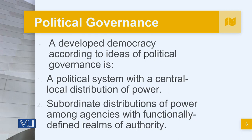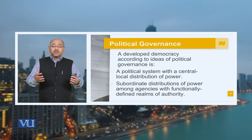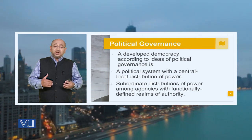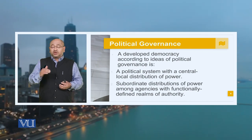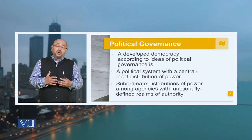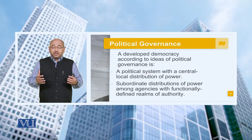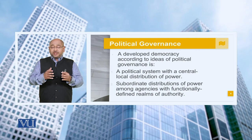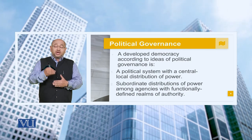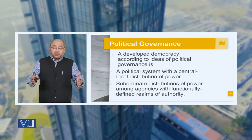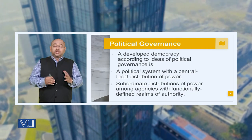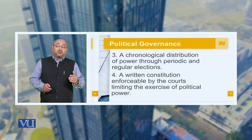A developed democracy, according to ideas of political governance, is a political system with a central and local distribution of power. The core component is usually the cabinet, with subordinate distribution of power among agencies that functionally define realms of authority — different ministries, departments in the provinces, institutions, and organizations. Each has its own limitations and scope of work governed by rules of business existing in all provinces. At the federal level, there is the ESTA code and other rules and regulations that promote the role of government, giving institutions, departments, and ministries their contextual roles to regulate what is actually taking place.